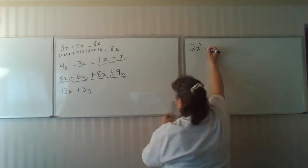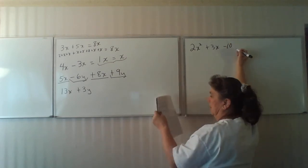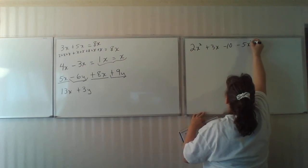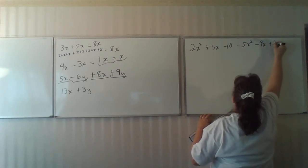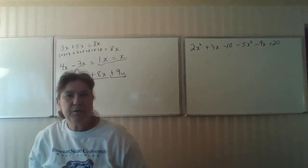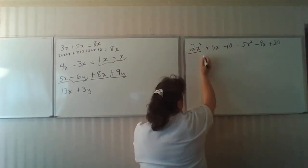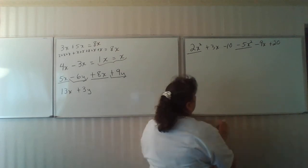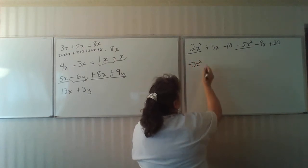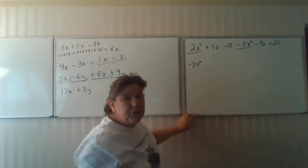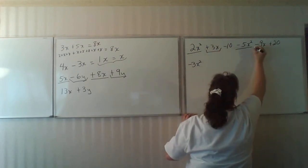2x squared plus 3x minus 10 minus 5x squared minus 9x plus 22. When we identify, we have a 2x squared minus 5x squared, so 2 minus 5 gives you negative 3x squared. Notice the x squared didn't change. You keep that with you exactly like it is.